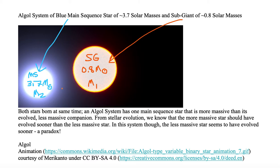Now, these two stars in a close binary were thought to have been born at the same time, and this Algol system has one main sequence star that is more massive than the evolved less massive star or the subgiant. From stellar evolution, we know that the more massive star should have evolved sooner than the less massive star. However, in this case, we have the less massive star that has evolved sooner than the more massive star. This is a paradox. How can this be?